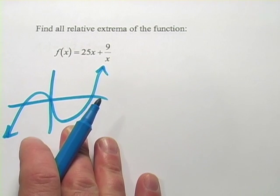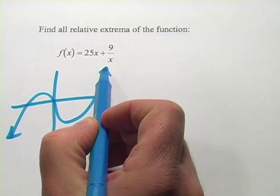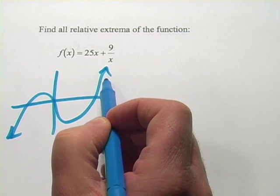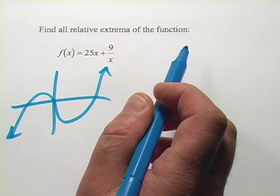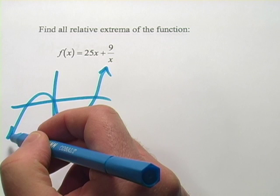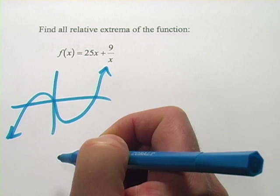It has absolute extrema. That's the absolute max when this thing gets the highest it can be in this function. And in this case, that's going to be all the way out at infinity. And this thing has an absolute minimum when it gets as low as it can here, and in this case that's going to be out at negative infinity.